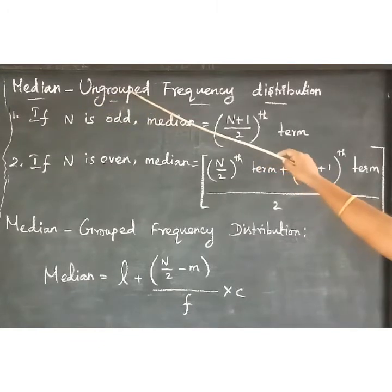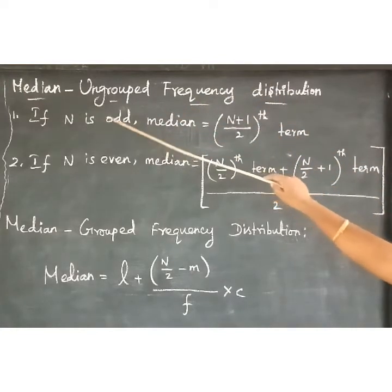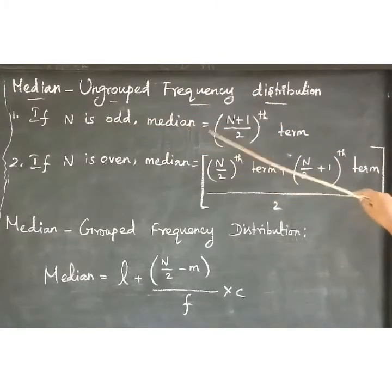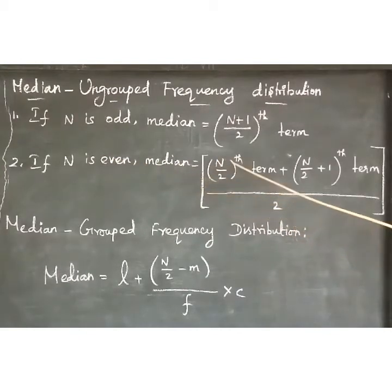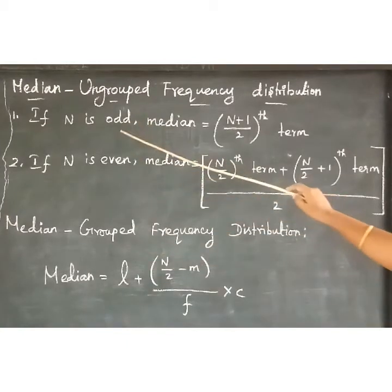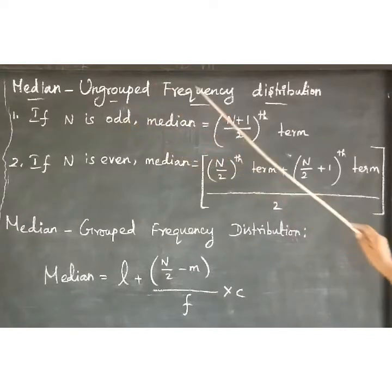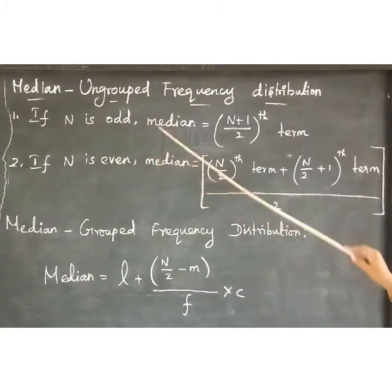Median formula for ungrouped frequency distribution. First one: if n is odd, median is equal to the (n+1)/2 term. If n is even, median is equal to the average of the n/2 term and the (n/2 + 1) term, divided by 2. If the number of observations is odd, there is only one middle term.